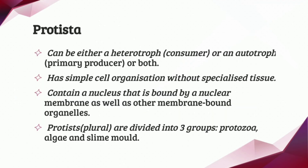Next, we have the Protista kingdom. The Protista kingdom can be either heterotrophs, which means consumers, or autotrophs, which means primary producers, or both. Protista has simple cell organisms without specialized tissue. This kingdom contains a nucleus bound by a nuclear membrane as well as other membrane-bound organelles. Protista is divided into three groups: Protozoa, algae, and slime mold.